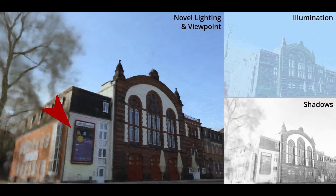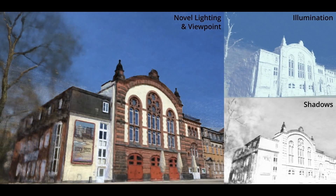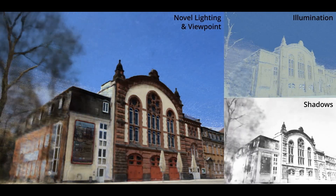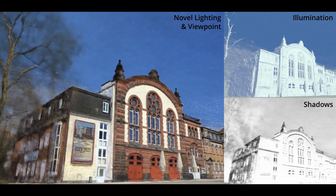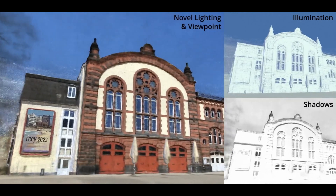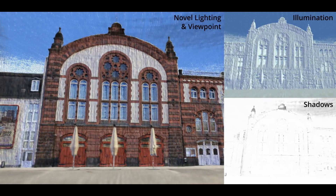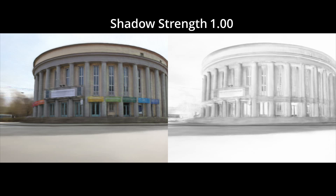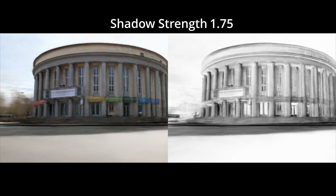Due to our intrinsic decomposition, we can edit image components such as albedo or shadows independently of illumination and other intrinsics. Here, we replaced the announcement poster with an ECCV 2022 poster and relit the composited scene. Note how the replaced poster looks natural with the rest of the scene, regardless of the lighting. In this example, we also adjusted shadow strength in post-render to make them stronger or lighter.